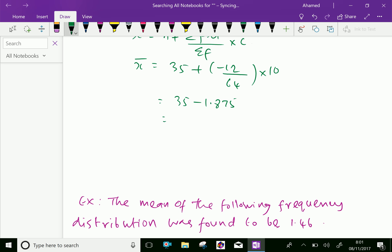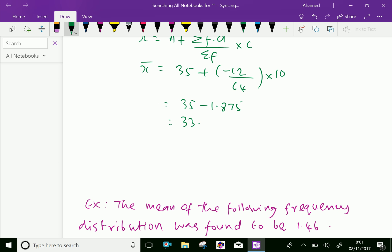Which equals 35 minus 1.875 equals 33.125. Therefore, the arithmetic mean of the distribution using the step deviation method is 33.125.